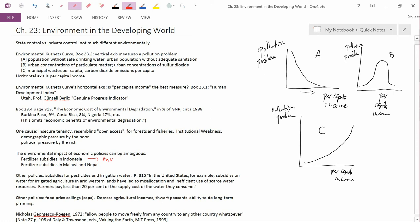The next point the book makes concerns not only the developing world, but also the developed world. Other policies it discusses. Subsidies for pesticides and irrigation water. And these clearly are subsidies for agriculture. And when you subsidize agriculture, then you make it profitable to cut down more of a pristine rainforest in order to convert the land to agriculture.